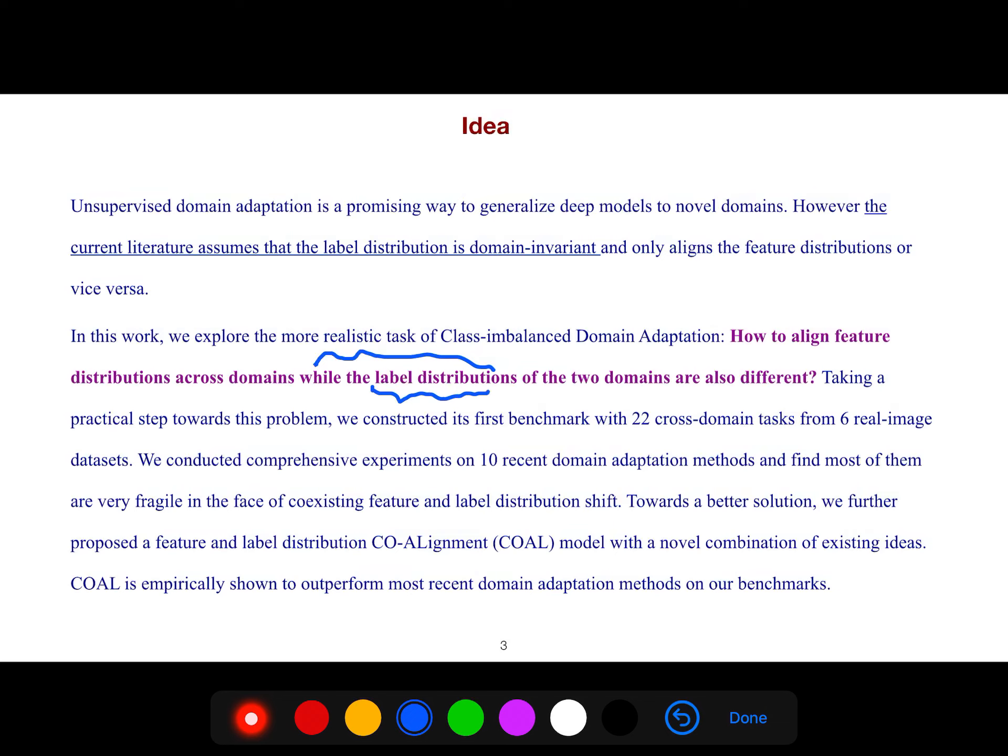Taking a practical step toward this problem, we constructed its first benchmark with 22 cross-domain tasks from six real image datasets. We conducted comprehensive experiments on 10 recent domain adaptation methods and find most of them are very fragile in the face of coexisting feature and label distribution shift.